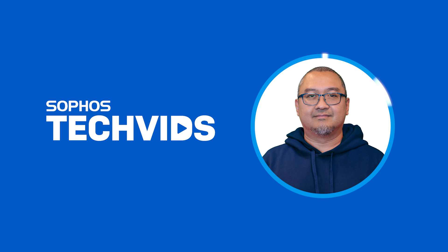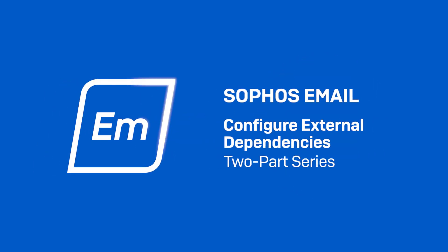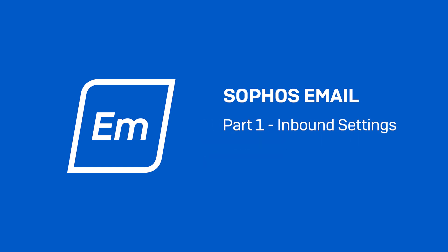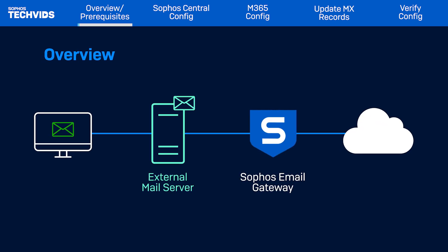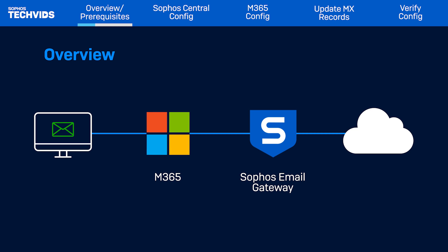Hi, I'm Jose from Sophos Support and I'll be showing you how to configure Sophos email external dependencies for Microsoft 365. This is a two-part series. In this part, I'll focus on the configuration of inbound settings. In the next part, I'll walk you through the outbound configuration, and this video is linked in the description. Sophos email gateway can be integrated with external mail clients to send and receive messages on their behalf, but I'll be focusing on Microsoft 365.